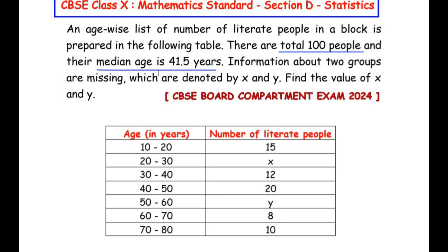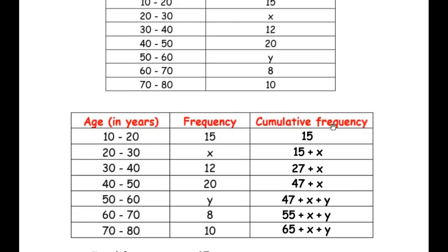Since the median is given, let us find the cumulative frequency. I have redrawn the table with the cumulative frequency already written. The first frequency remains the same, so if the frequency is 15, the cumulative frequency is also 15. From the next row onwards it starts to accumulate: 15 adds up with x giving 15 plus x in the second row. For the third row, 15 plus 12 gives 27, so we get 27 plus x. Then 27 plus x adds up with 20, giving 47 plus x.